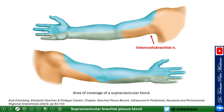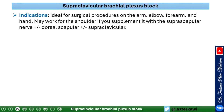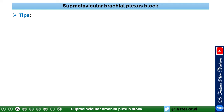What's missing from the supraclavicular block is the intercostal brachial nerve — mainly needed for tourniquet tolerance — which you can address with 5–10 ml of subcutaneous local anesthetic. This block is ideal for surgical procedures on the arm, elbow, forearm, and hand. It may also work for shoulder if supplemented with the suprascapular nerve, dorsal scapular nerve if needed, and supraclavicular branches. Position is always key: turn the head, place the patient supine, elevate the head, and keep the arm completely adducted.